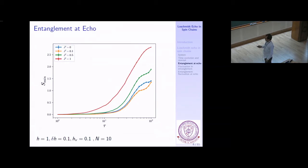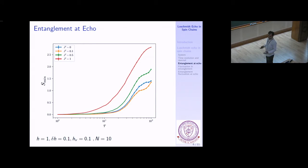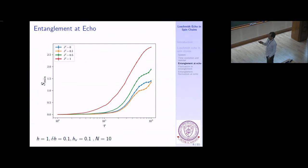This plot shows the entanglement dip value for different values of j-prime as a function of τ. The graph is consistent with common sense: if τ is very small, the system does not have time to damage the initial state, and in all cases the entanglement comes back to zero. But as we increase τ, the larger j-prime is, the more damage has happened. By τ equal to 100 or so, there is a large difference between the transverse Ising (j-prime = 0, blue curve) and j-prime = 1, which is a high value in the non-integrable regime.